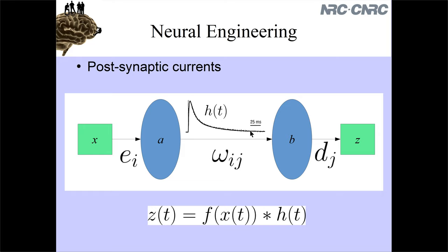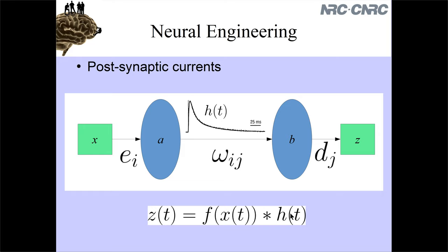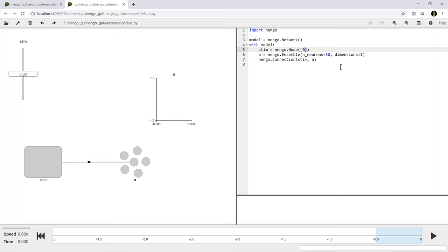For people familiar with applying filters to things, great. If not, the only thing to think about is that it's smoothing the output - if you suddenly change x, z is not going to change all that quickly. We're going to play around with that and do some examples right now. This notation of convolving functions together is very common in all sorts of engineering fields, so there's well-established math for this - we're just going to use that.